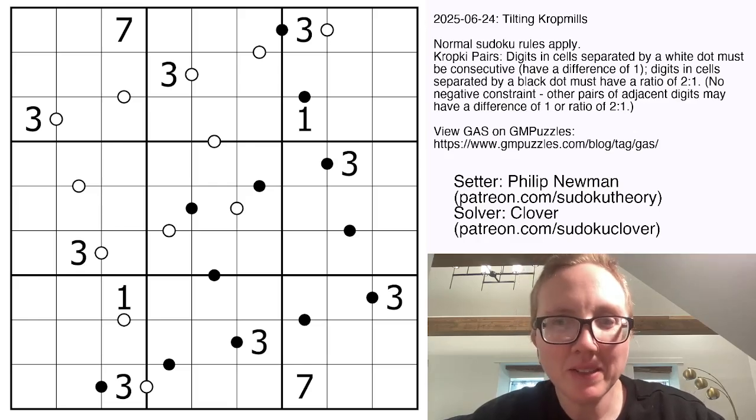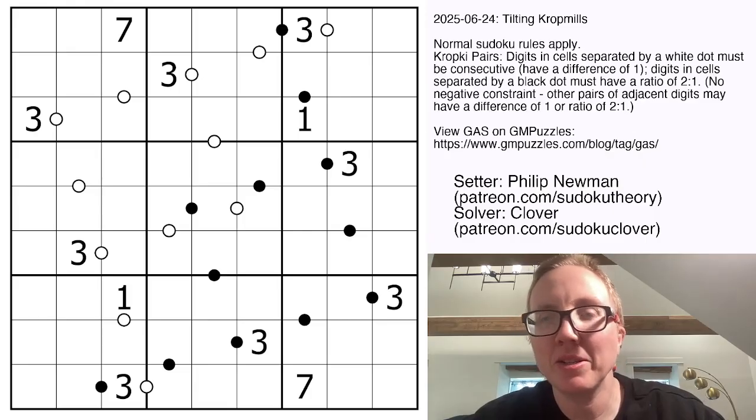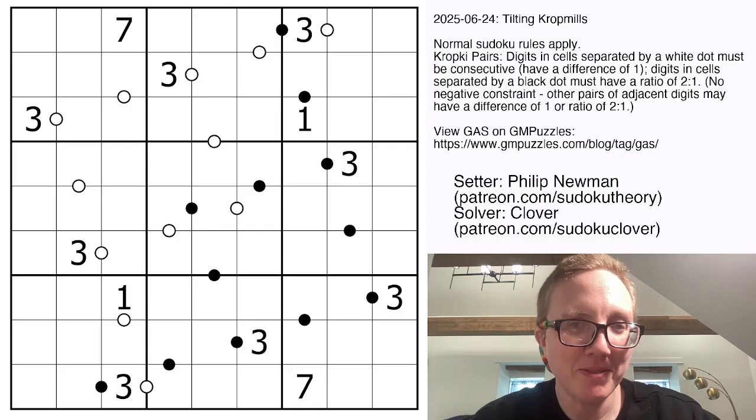Hello, my friends. I'm Clover, and this is Genuinely Approachable Sudoku. Today we are solving Tilting Crop Mills by Philip Newman.